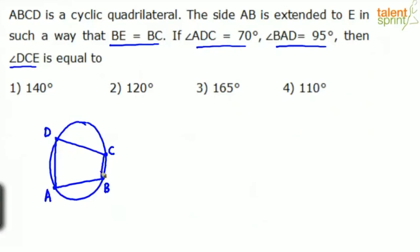The side AB is extended to E. Now this side AB is extended to E, up to E. Let's say this is the point E, in such a way that BE is equal to BC. So BE equals BC. This is BE, and here is BC. These two are equal.